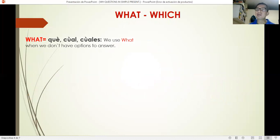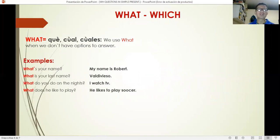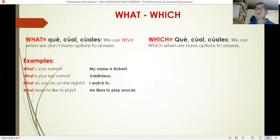WHAT means qué, cuál, or cuáles. We use what when we don't have options to answer. Examples: What's your name? My name is Robert. What is your last name? What do you do at night? I watch TV. What does he like to play? He likes to play soccer. There are no options to choose from - so many names, so many last names, so many activities he can do.